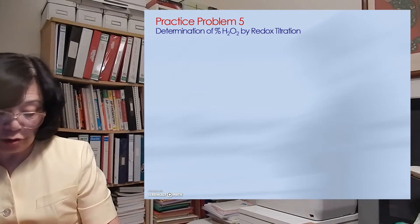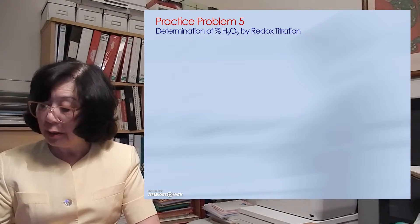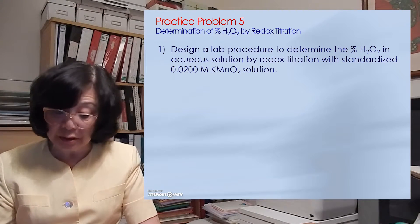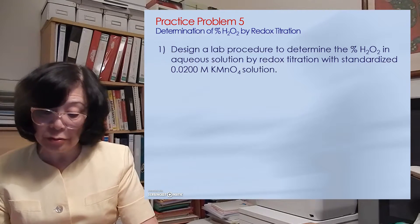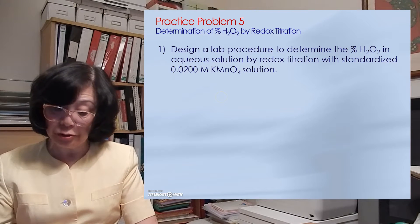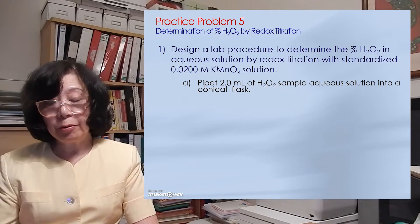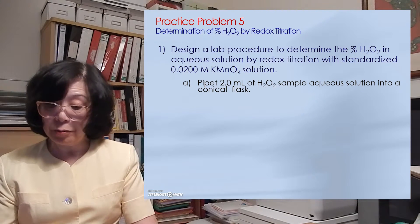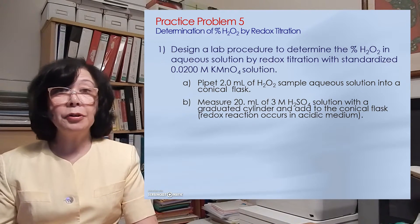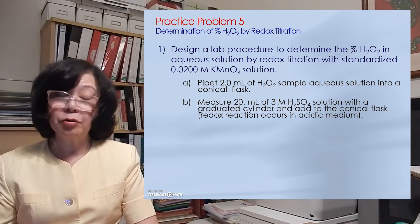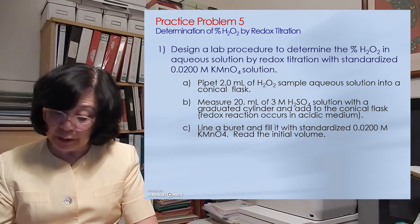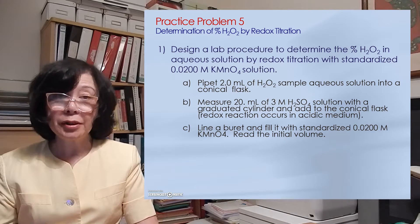The next question deals with a redox titration — we want to determine the percentage of hydrogen peroxide in a redox titration. Design a lab procedure using a standardized solution of 0.0200 molar potassium permanganate solution. We usually do the standardization using oxalate ion or iron 2-plus ion to know the exact molarity of the permanganate solution. Because the permanganate solution is very dilute, we use a very small sample of the hydrogen peroxide — in this case 2 milliliters — pipetted into a flask. Then I add 20 milliliters of 3 molar sulfuric acid to provide the hydrogen ion in the acidic medium. Then I do lining of my burette with the standardized potassium permanganate solution to make sure there is no water droplet that would dilute the solution.